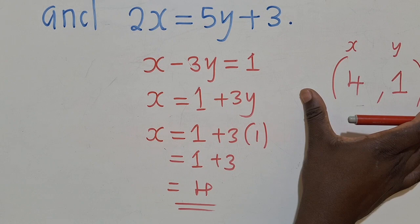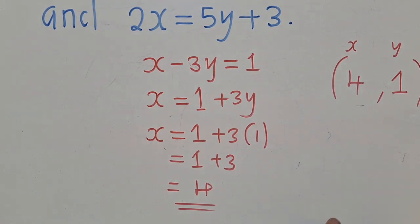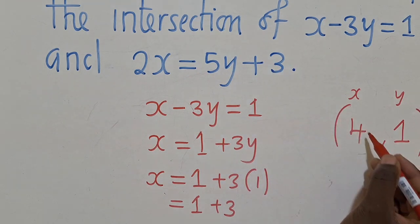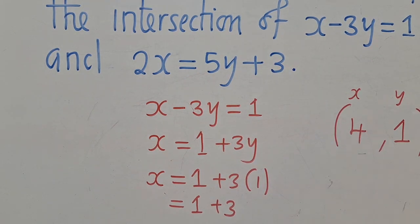So these are the coordinates of the meeting point of these two lines. This one and this one. They're meeting at 4, 1. Thank you so much for watching. Please remember to share, subscribe. If you have not yet subscribed, leave a comment in the comment section. And bye-bye.